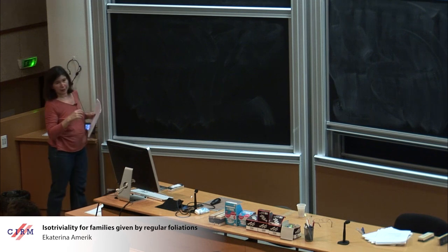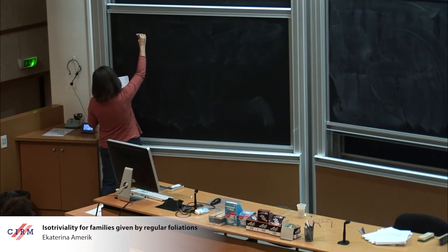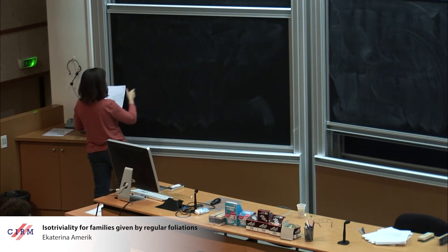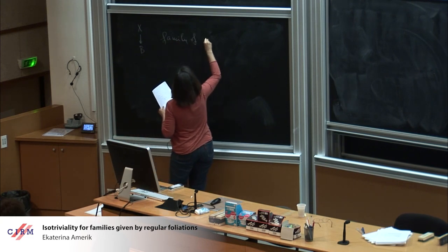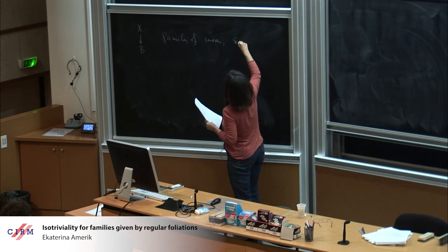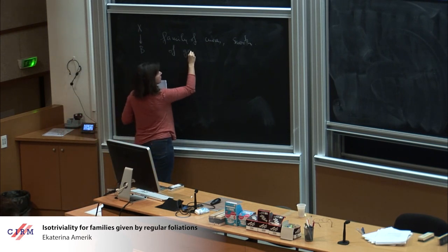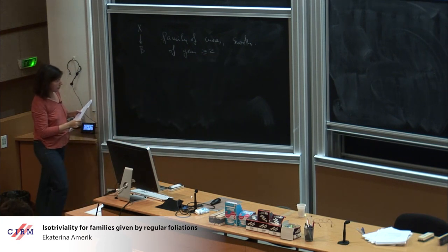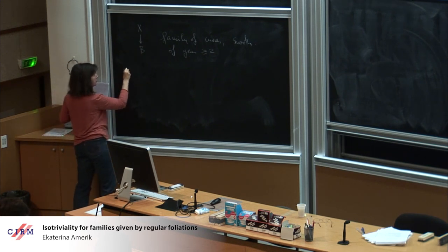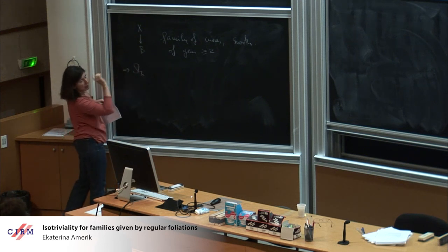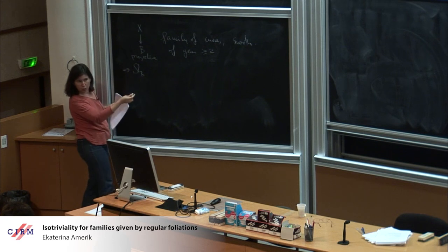Let me start with the easiest manifestation of this. Let's say you have a smooth family of curves of genus g, which is at least two, over some base B. If B is projective, then the cotangent bundle of B must have positivity properties.